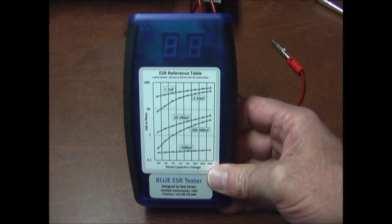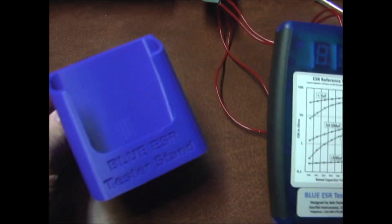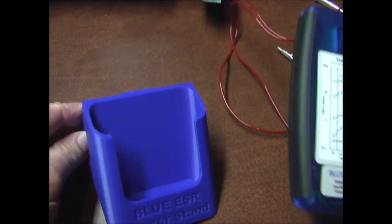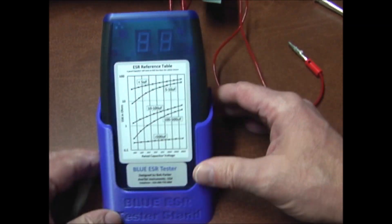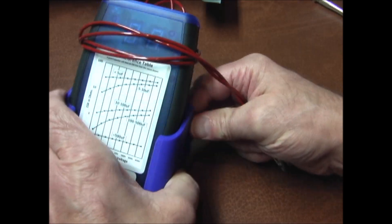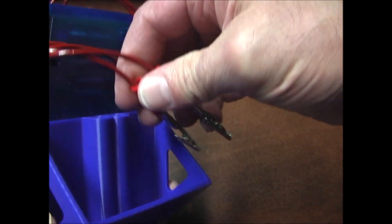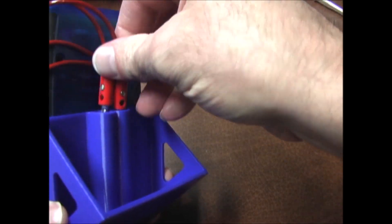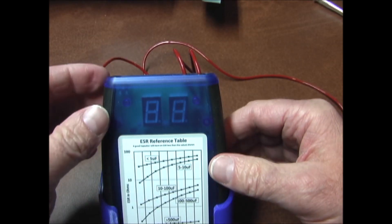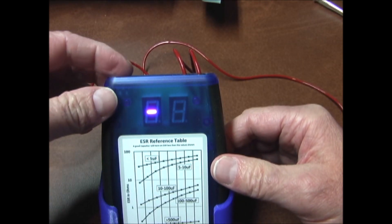It's easier to read the numbers when it's tilted upward, so I have this stand made specifically for the Blue ESR tester. It holds it at a nice angle, and when you're not using the tester, it has a spot in the back to store the leads.